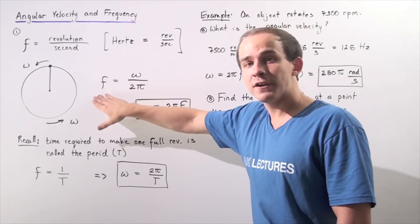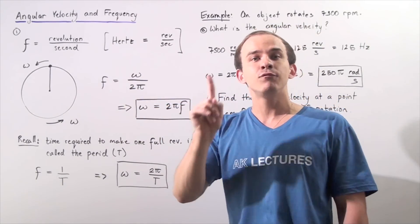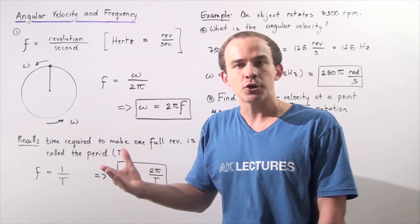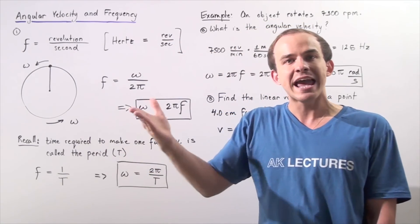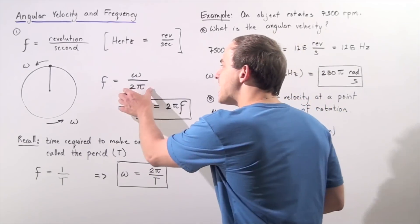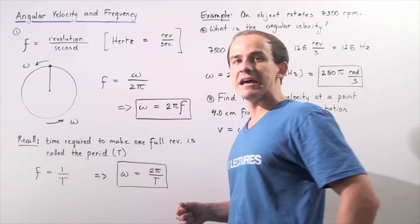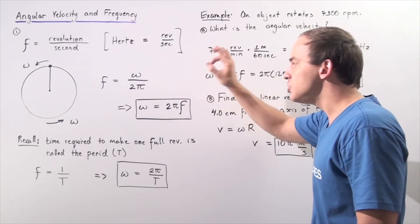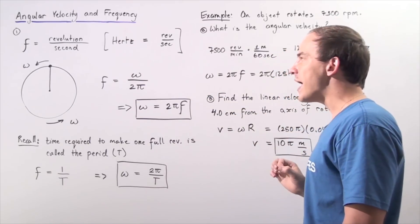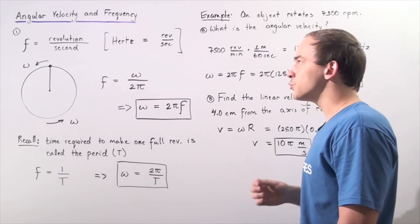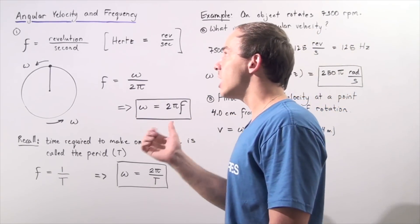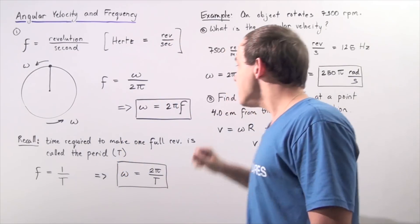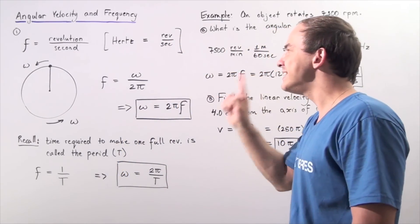If we want to represent our angular velocity in terms of frequency and two pi, we simply rearrange and bring it over to the left side, giving us the following very useful equation: omega equals two pi times frequency. This equation relates the angular velocity of the object and the frequency.